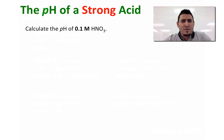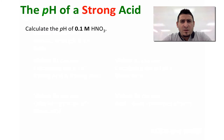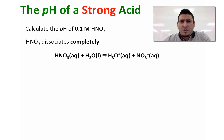Now we will consider the first example on how we can calculate the pH of a strong acid. Calculate the pH of a 0.1 molar solution of HNO3, or nitric acid. Nitric acid is known as a strong acid so it will dissociate completely in solution. The dissociation equilibrium of nitric acid is: HNO3 + H2O → H3O⁺ + NO3⁻.